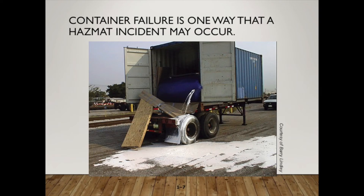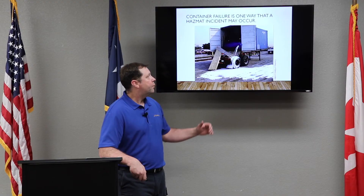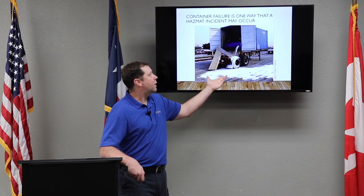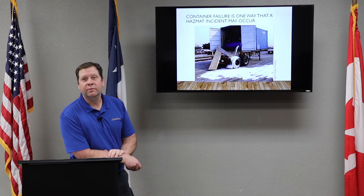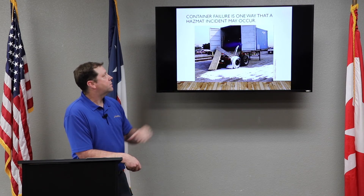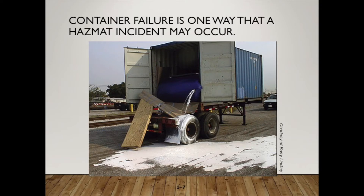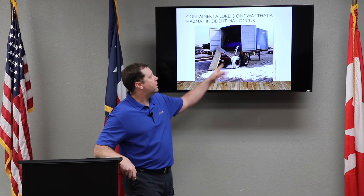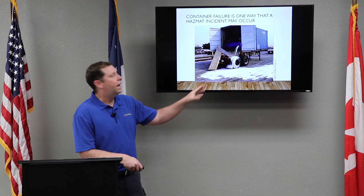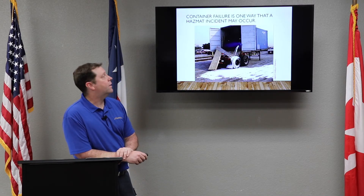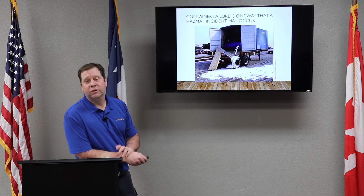Container failure is one way that a hazmat incident can occur. As you can see here, there's some sort of container leaking a liquid. Looking at this, when you first arrive, you probably have no idea what that could be — it could be milk, paint, or something we don't even know about. As we get further into the studies, you'll also learn how to look at the container and get an idea of what the material may be. But as of right now, looking at this picture, we have no idea what the hazmat is.